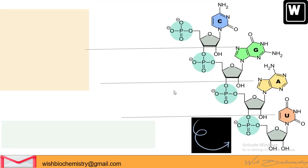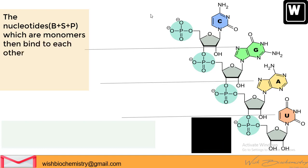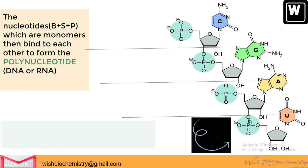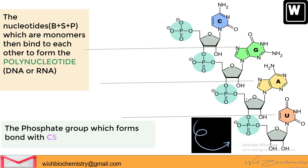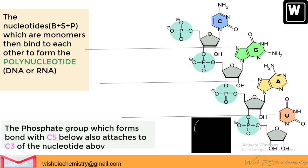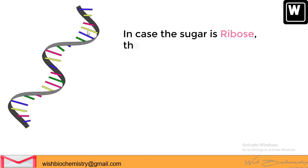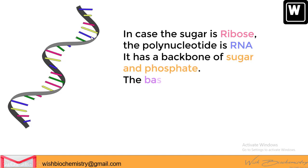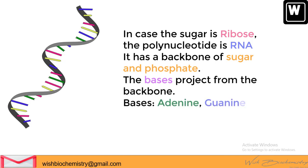These monomer nucleotides — each consisting of a base, sugar, and phosphate — bind to each other to form a polynucleotide chain, which can be either DNA or RNA depending on the type of sugar. The phosphate group of one nucleotide binds to carbon 5 below and to carbon 3 of the nucleotide above, repeating to form a long chain. If the sugar is ribose, the resulting polynucleotide is RNA, with a backbone of sugar and phosphate, and nitrogenous bases projecting outward. In RNA, the pyrimidine bases are cytosine and uracil.